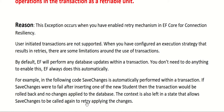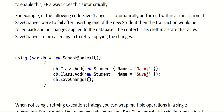For example, in the following code — let me show you — the SaveChanges is automatically performed within a transaction. I have used a using block inside which I'm constructing the SchoolDbContext, putting some students into the class table, and calling SaveChanges. This will be automatically executed in a SQL Server transaction.